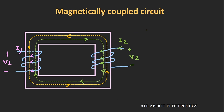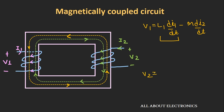Including the self-induced EMF, the expression for V1 is L1·di1/dt − M·di2/dt, where the first term is the self-induced EMF and the second term is the induced EMF due to mutual coupling. Similarly, the expression for V2 is L2·di2/dt − M·di1/dt. As you can see, the polarity of the induced voltage depends upon the way the winding has been wound around the core.